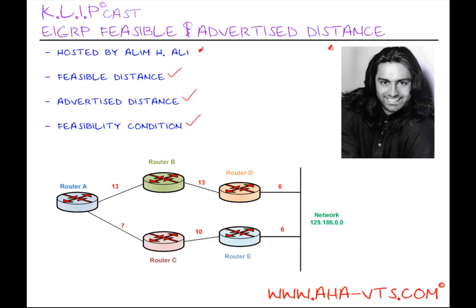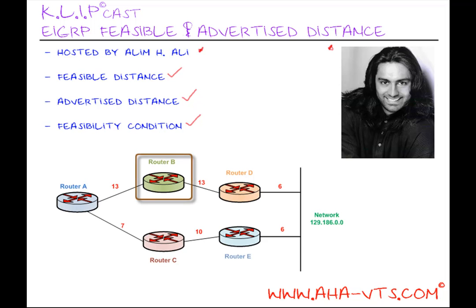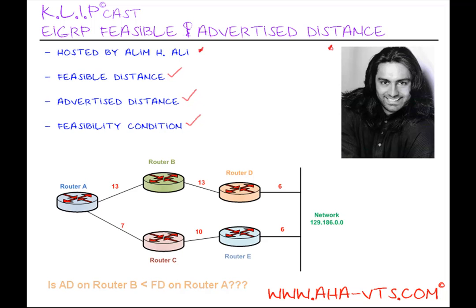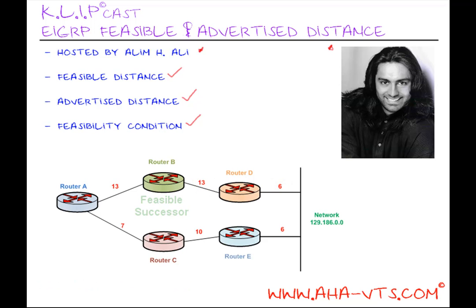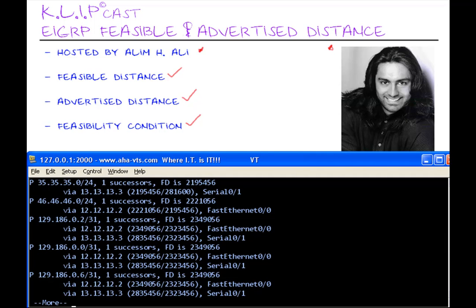Getting back to our diagram, since we found that the route to 129.186.0.0 goes through router C with a metric or feasible distance of 23, this is our successor. But we also have a route through router B. So let's determine if the advertised distance of router B is less than the installed feasible distance on router A. Router B has an advertised distance of 19, which is less than the feasible distance of 23 installed on router A. Therefore, router B is the feasible successor of router A. Getting back to my live network, we can see this on my EIGRP topology table on router A. Although the distance through router B is greater than that of router C, the advertised distance on router B is less than the feasible distance installed on router A. Therefore, router B has a loop-free route to network 129.186.0.0 and is also a feasible successor of router A.